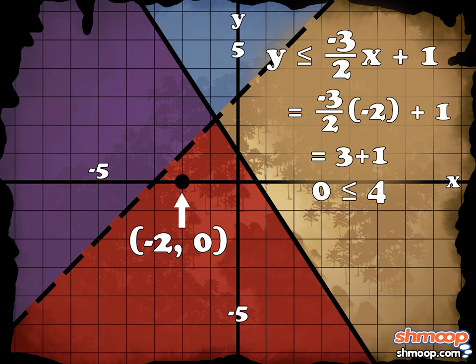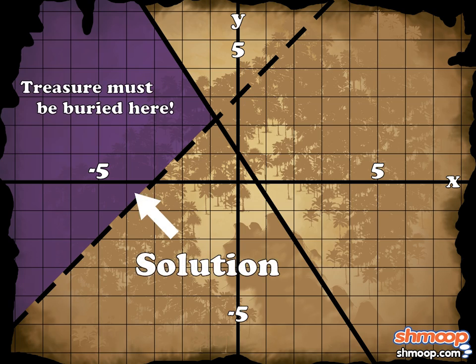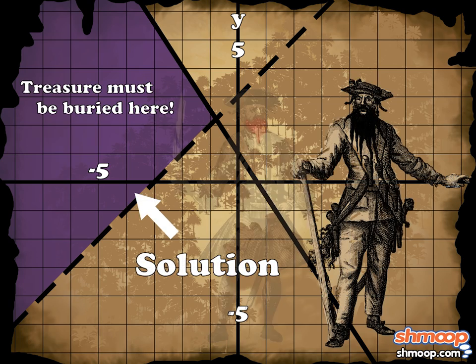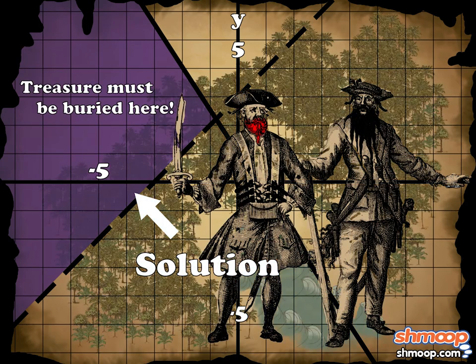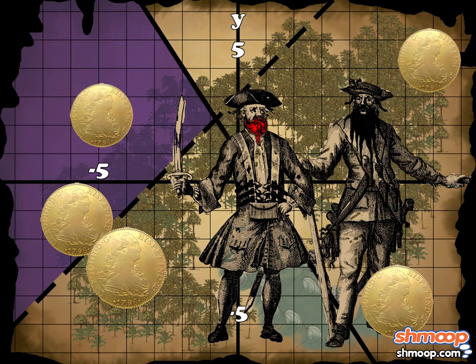Seeing where the two shaded regions intersect, we get our solution. Now Blackbeard and Redbeard know where to start looking for that treasure. Hopefully, they can track it down before they're both whitebeard.